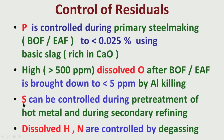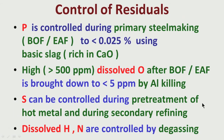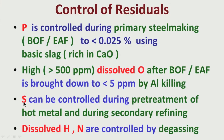Sulphur is another important residual that has to be brought down. This cannot be done at the primary steelmaking stage like phosphorus. Sulphur has to be brought down in the pre-treatment of hot metal itself — either in the blast furnace or when you take out hot metal from the blast furnace before putting it in BOF or EAF. Alternatively, after we have made steel in BOF, there is a stage called secondary refining carried out in the ladle — ladle metallurgy — where sulphur can also be brought down. So sulphur can be controlled either during pre-treatment of hot metal or during secondary refining.